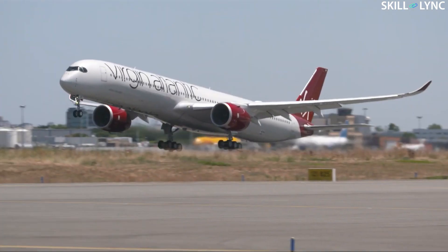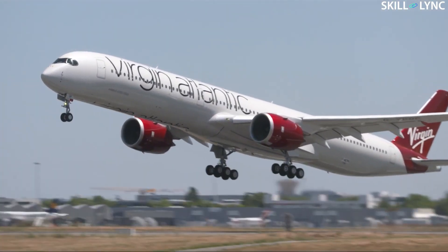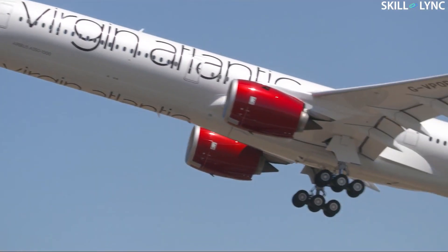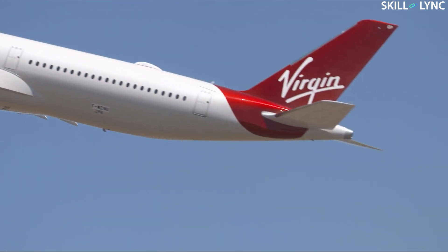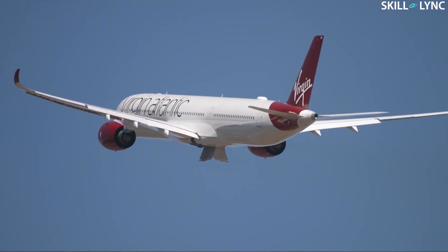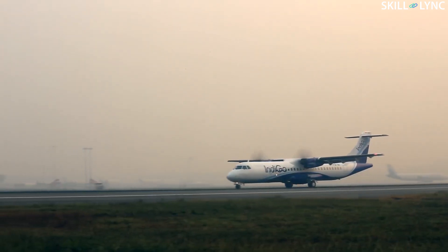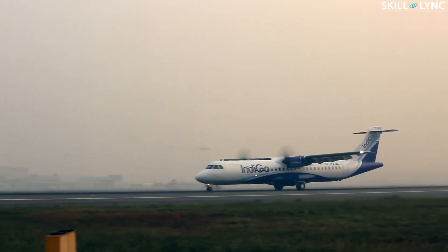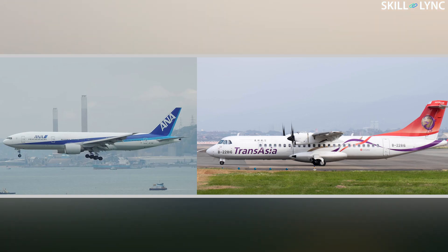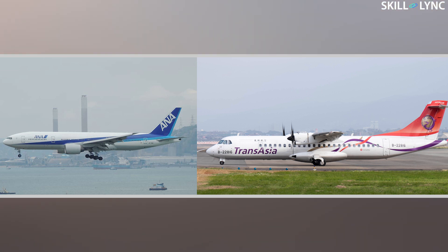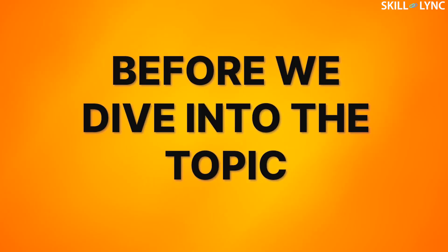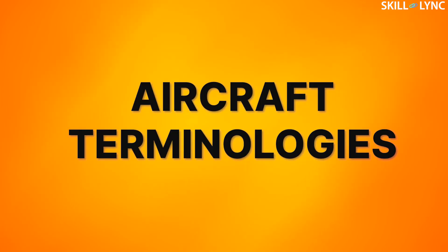Hey guys, welcome back to the channel. Those of you who travel by air very often would have noticed that airlines normally use big turbojet aircraft for longer routes and smaller propeller aircraft for shorter routes. There's something very peculiar and different between these two types of aircraft — it's their tail wings. Before we dive into the topic, it would be better if we learned a few aircraft terminologies.